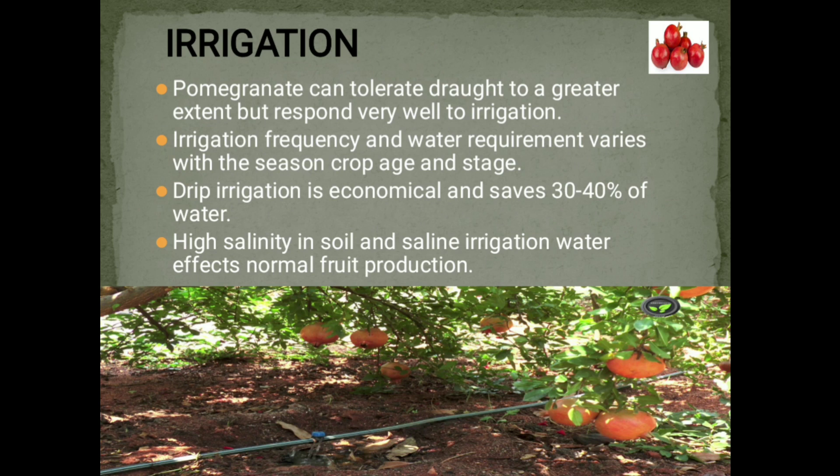Irrigation. Pomegranate can tolerate drought to a greater extent but responds very well to irrigation. Irrigation frequency and water requirements vary with the season, crop age, and stage. Drip irrigation is economical and saves 30–40% of water. High salinity in soil and saline irrigation water adversely affects normal fruit production.